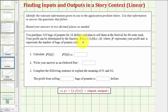Notice how the profit function is a linear function in slope-intercept form. Our first question is to calculate p(56), which means you want to find the function value when the input or x value is 56.